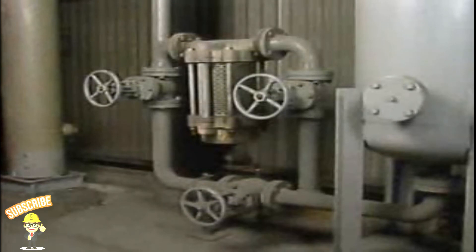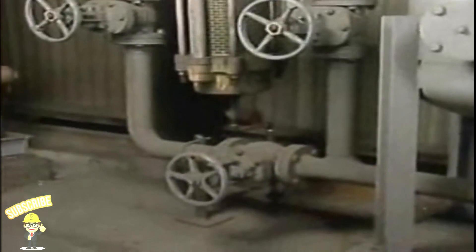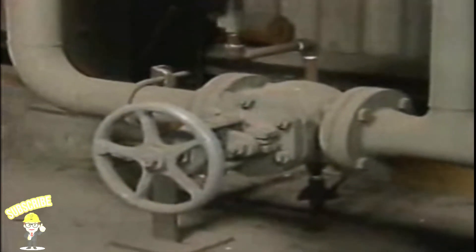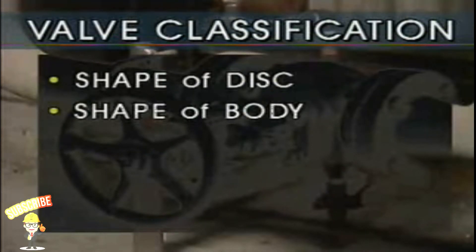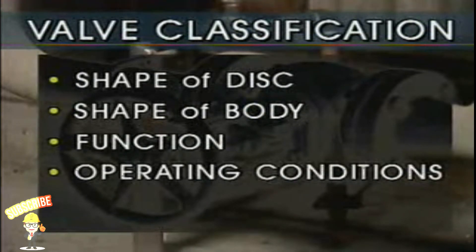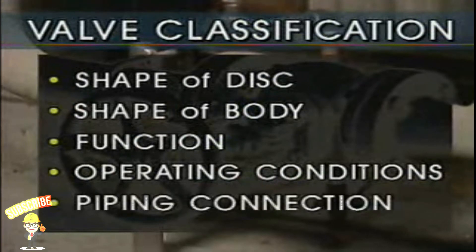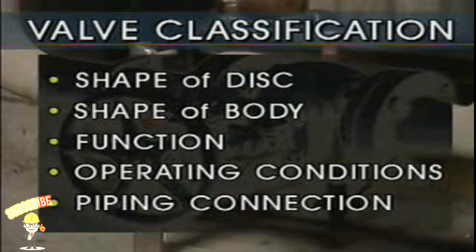Valves come in many shapes and sizes, and they can be used in many different applications. The way a particular valve is identified can depend on factors such as its physical characteristics or how it's being used. Among the common ways to classify a valve are by the shape of its disc, by the shape of its body, by its function, by the conditions under which the valve operates, and by the method used to connect the valve within the piping system. Keep in mind, though, that valves are often identified using more than one of these classifications.